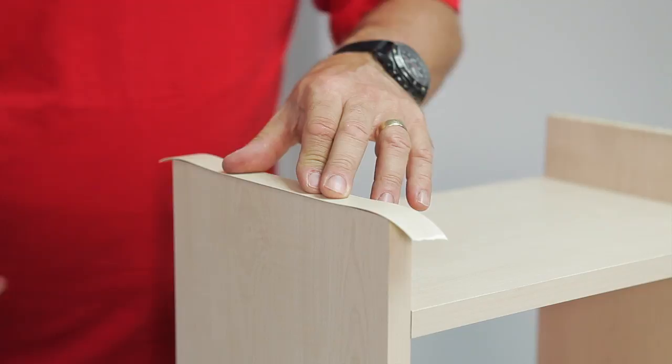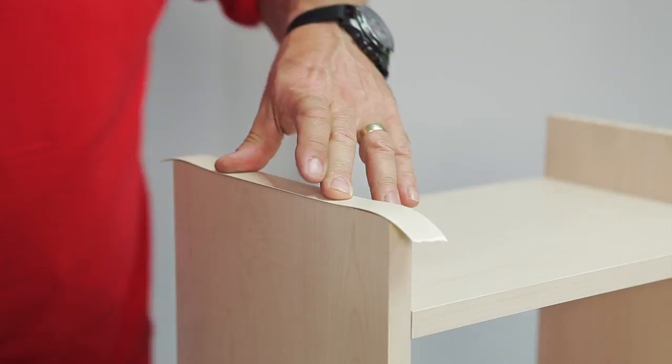You can protect the surface of the edging tape by using a piece of plain paper. This also protects the surface of the iron.